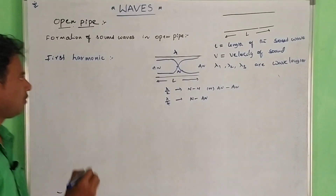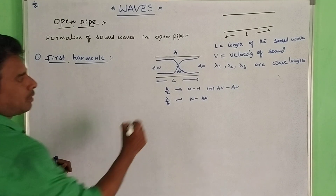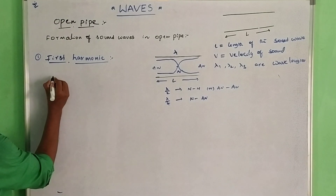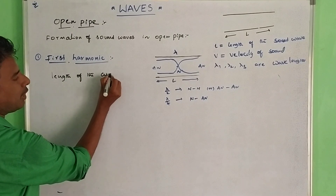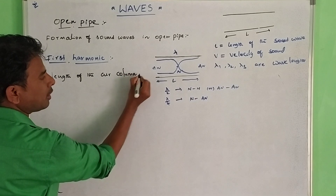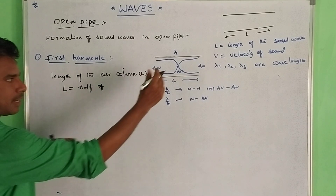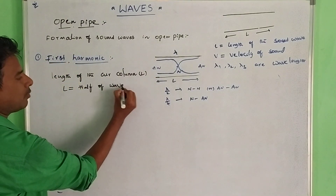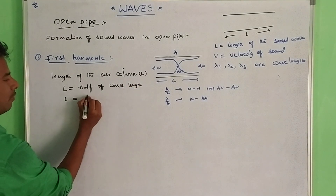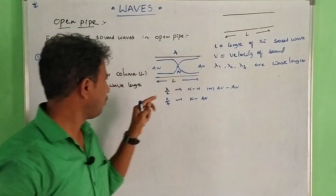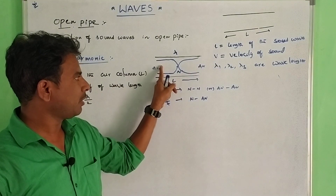First harmonic: now explain the first harmonic. The length of the air column L is equal to half of the wavelength — that is, L = lambda 1 / 2. L is the total length, and the antinode-to-antinode distance is lambda by 2.